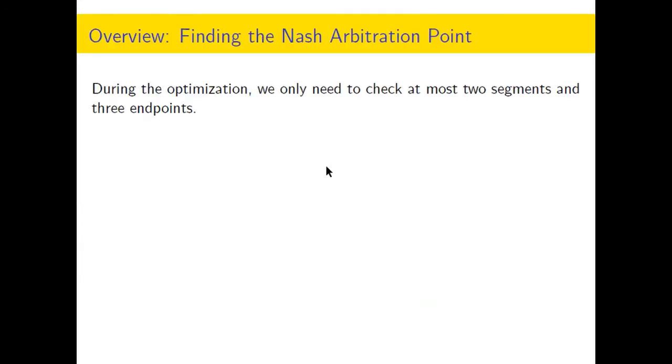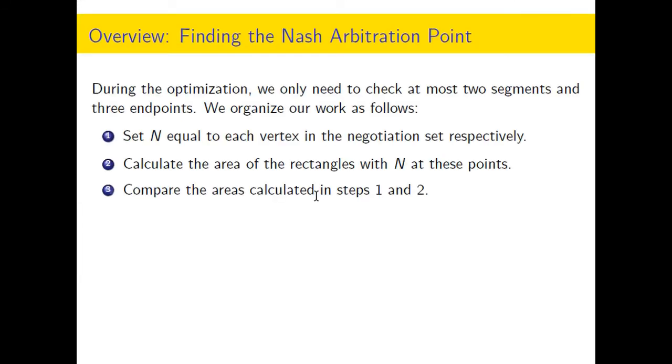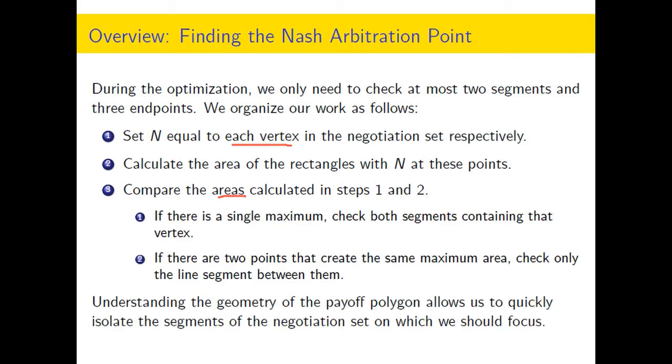Let's take a look at the recommendations. The idea is that if we just calculate the area at each vertex, we let the Nash point go to each vertex and calculate those areas, and we're looking for the maximum. If we have a single maximum, one of those vertices has a maximum area when we create that rectangle with it and the status quo point. If there's a single maximum, then I just check both line segments that contain it, and there are three endpoints.